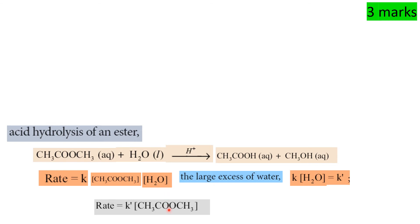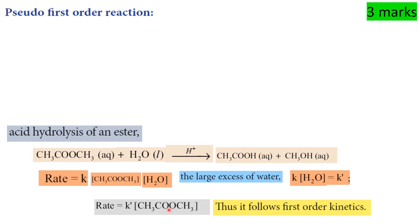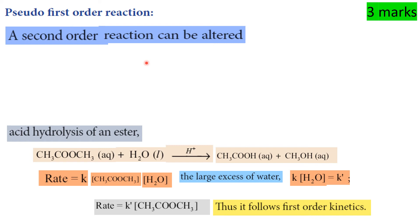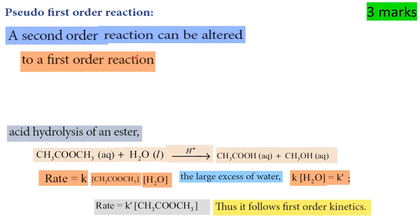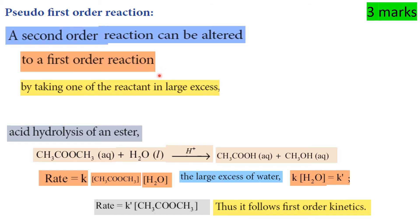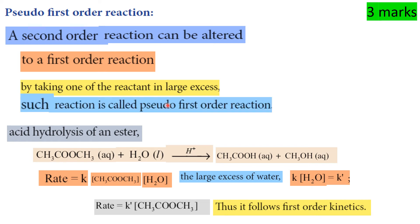This is what we call a pseudo first order reaction. A second order reaction can be altered to a first order reaction by taking one of the reactants in large excess.